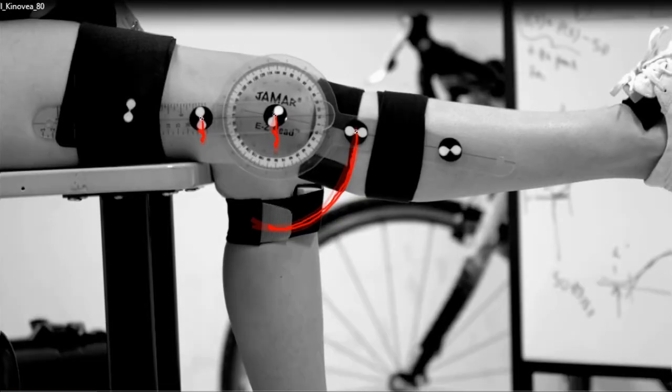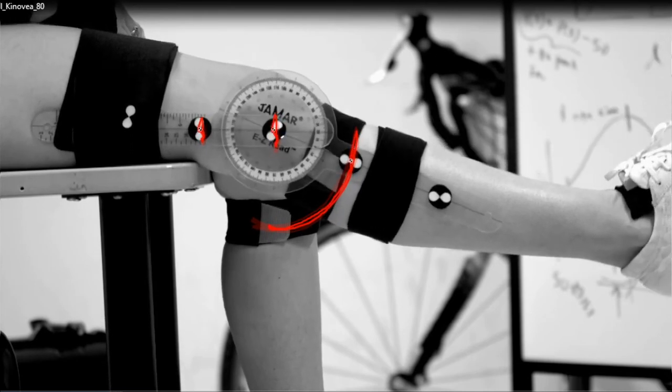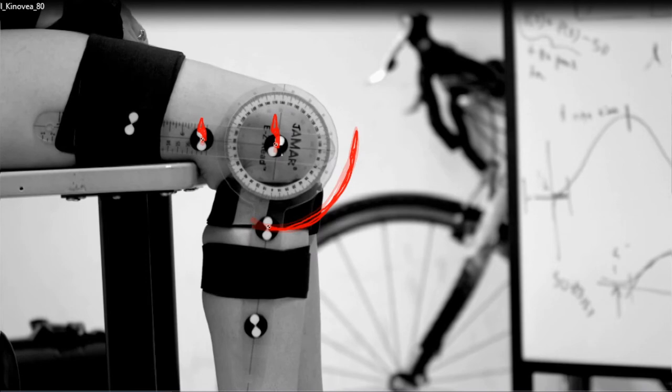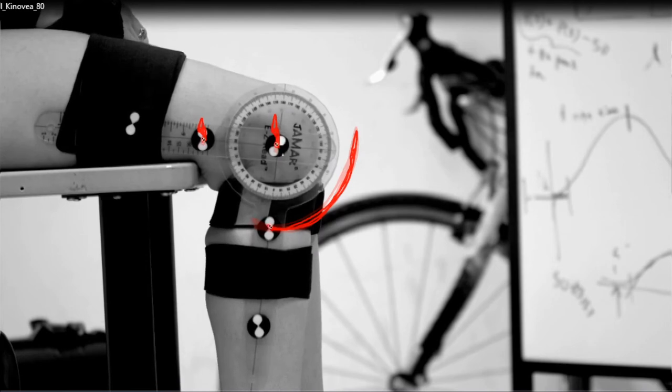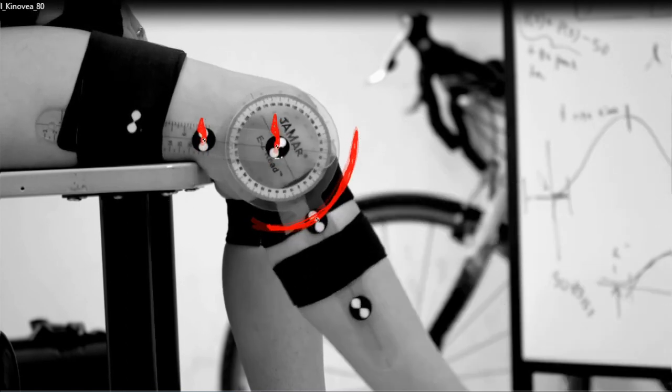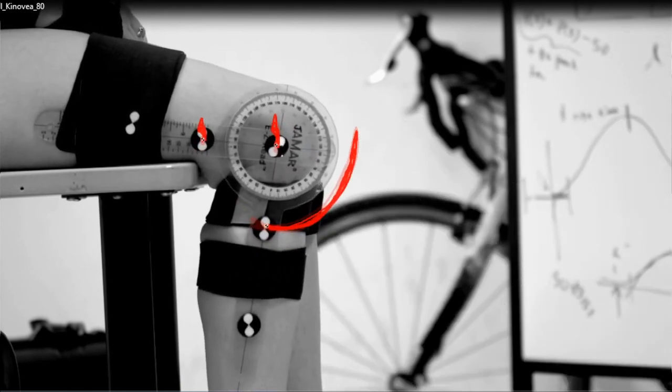Each recording started with the knee at full extension defined as zero degrees. The knee then bent to 90 degrees flexion and back up. This motion was repeated at three speeds: 40 beats per minute to simulate walking, 120 beats per minute to simulate running, and in between at 80 beats per minute.